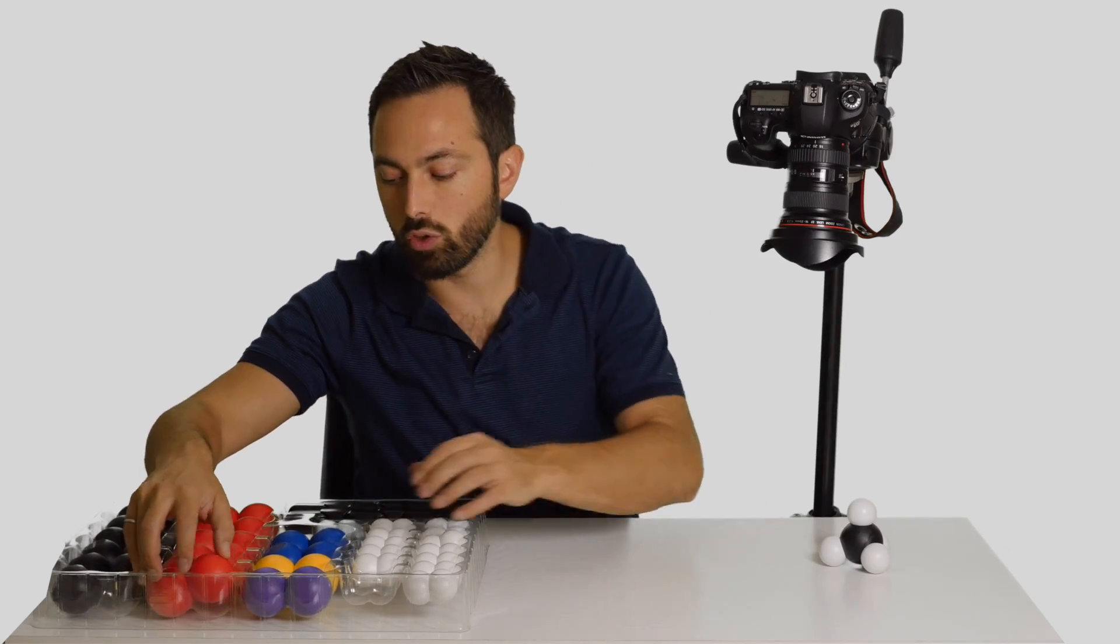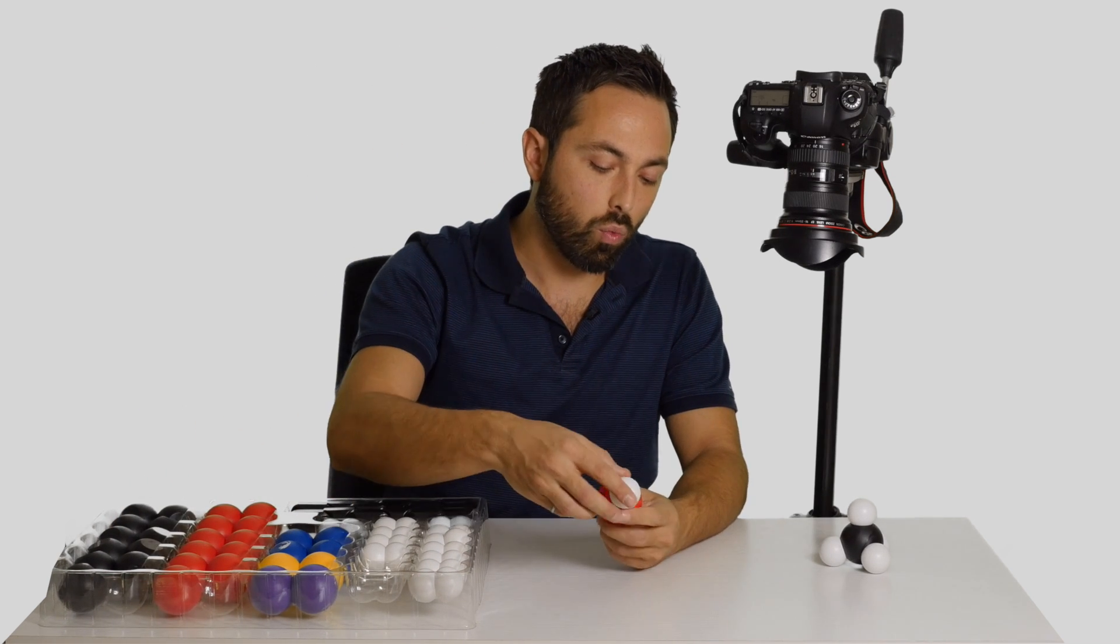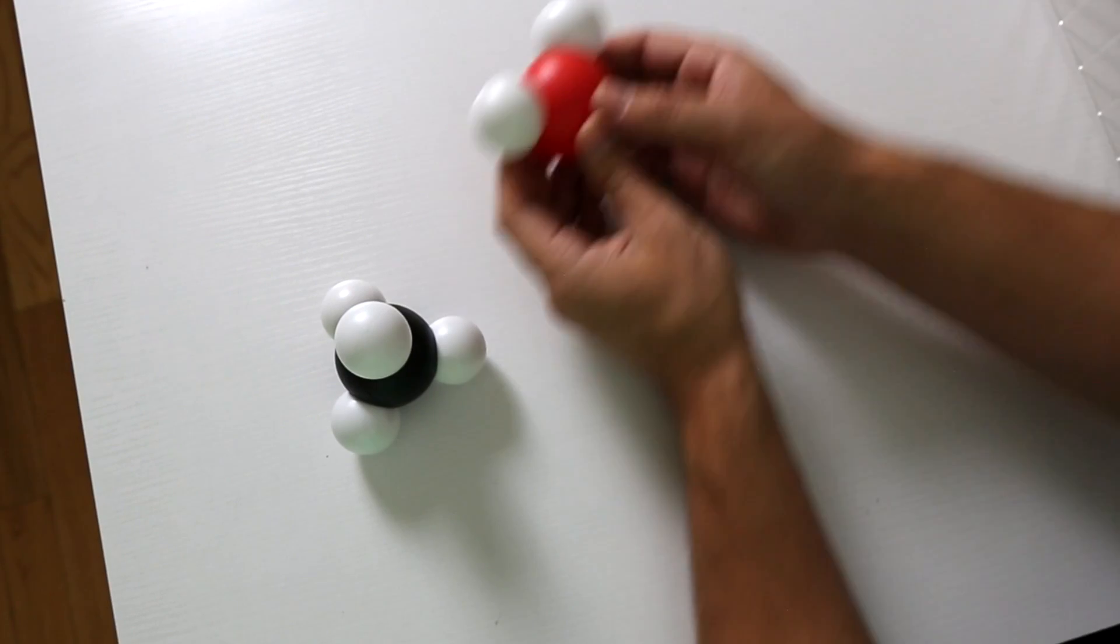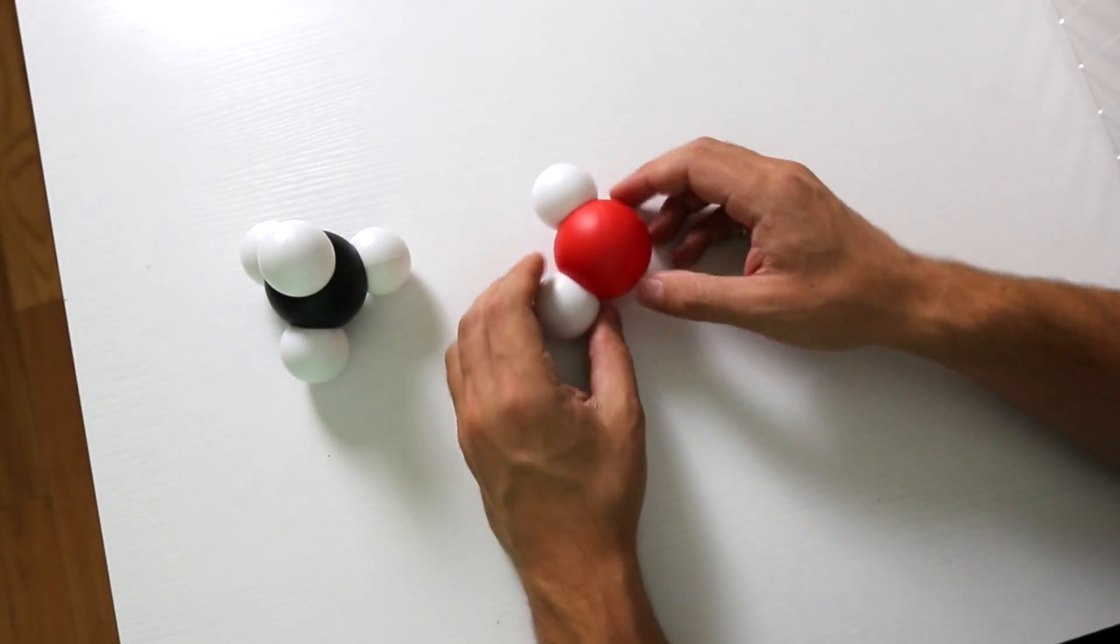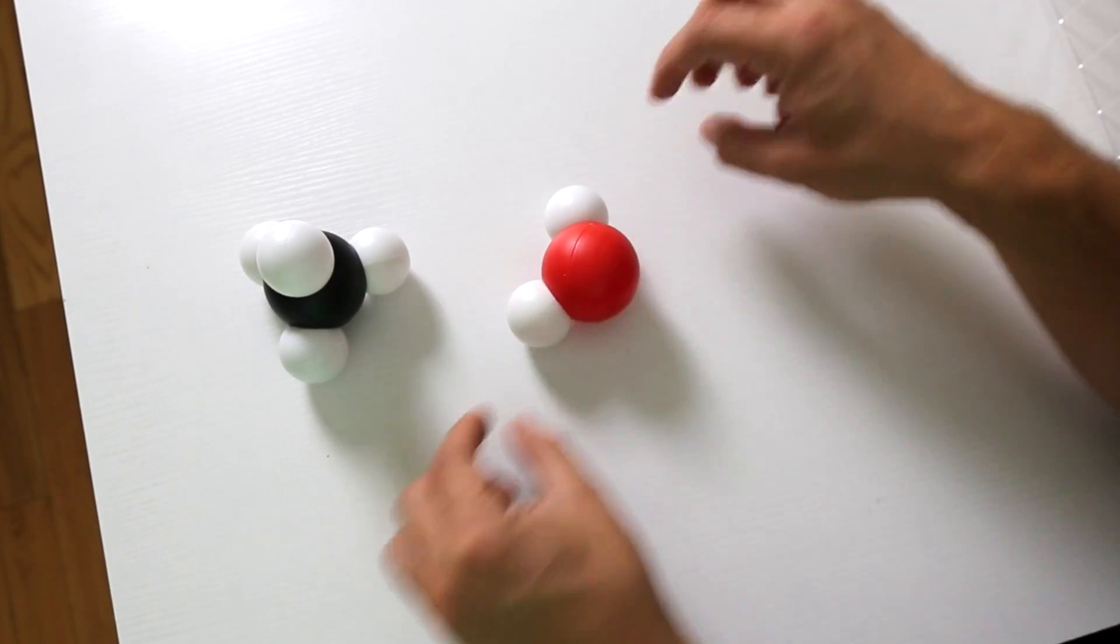But if you compare that to a water molecule, you'll notice something a bit odd. Water has this kind of bent structure. So the hydrogens have not separated themselves as far apart as they can be, which would just put this in a line.